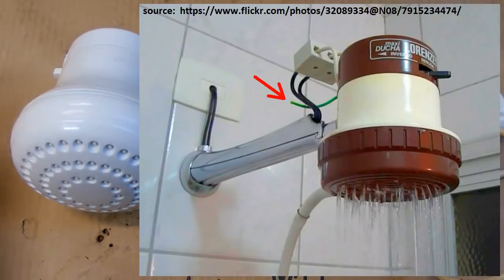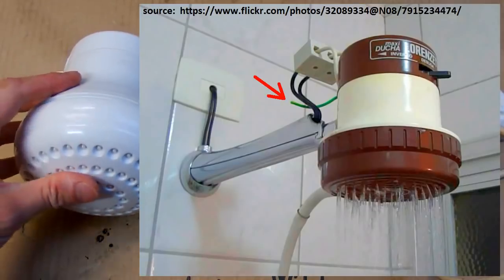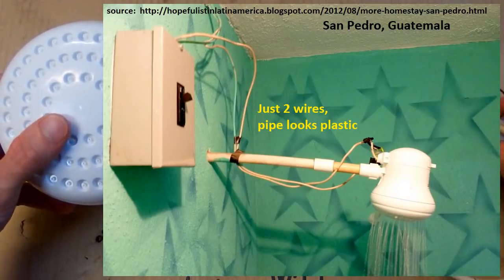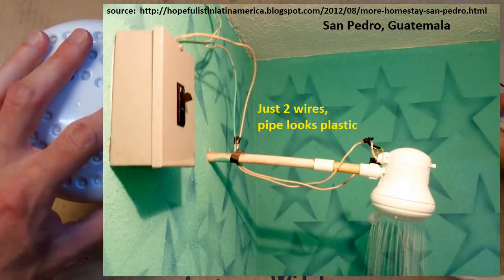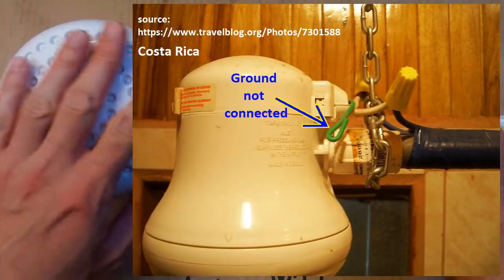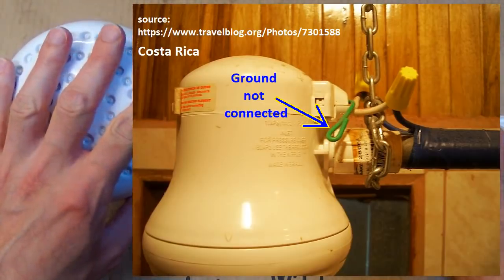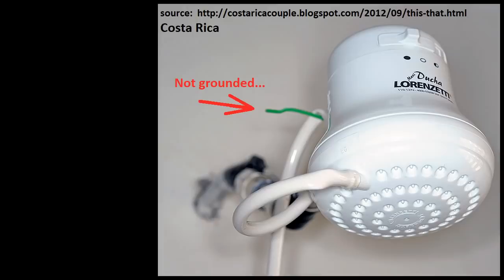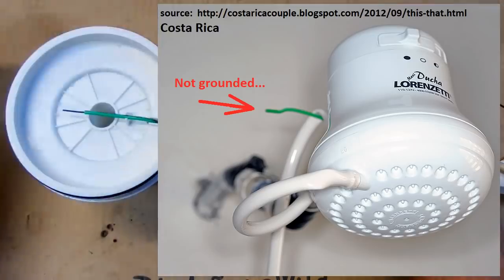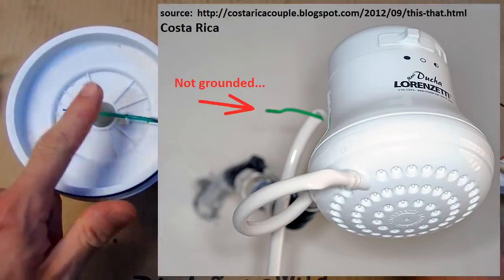So I tested it in both situations. Grounded and not grounded. And it turns out that if it's grounded properly it's almost impossible to get a shock from it. Even if your body is grounded and you touch the nozzles directly you probably don't get a shock. Because the voltage in the water at the nozzles is very low. Thanks to this grounding electrode at the outlet.